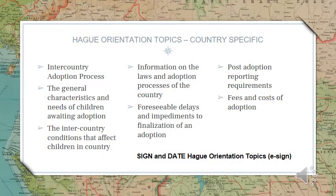The first document I want you to open is the Hague Orientation topics for Taiwan. It is important that you read this document thoroughly, but I'm going to touch on some of the main topics. Anyone who is adopting internationally must have an approved home study, apply to receive pre-approval to adopt from the United States Citizenship and Immigration Services, and prepare a set of documents called the dossier, which will be submitted to Taiwan for approval. Different countries require different documents, so this is why the dossier instructions are specific to Taiwan.